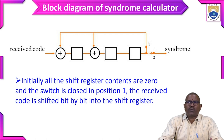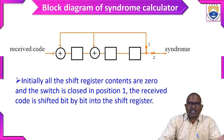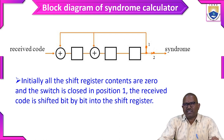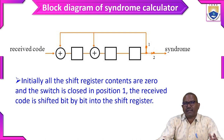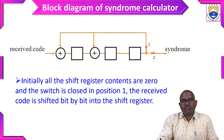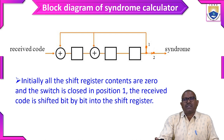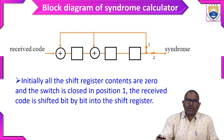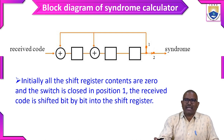This is the block diagram of the syndrome calculator. In the transmitter we use the encoding procedure, whereas in the receiver we use the syndrome calculator. Here we are going to find where errors are generated. We added n minus k parity bits, and in those n minus k parity bits errors may be produced — so here we are going to detect that error and correct it.